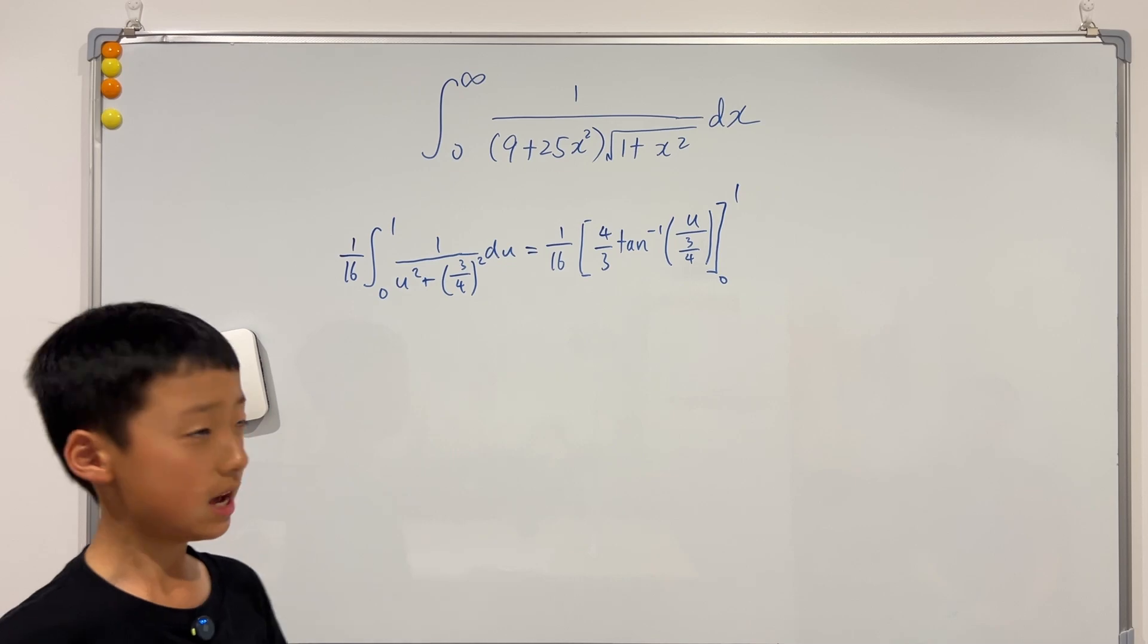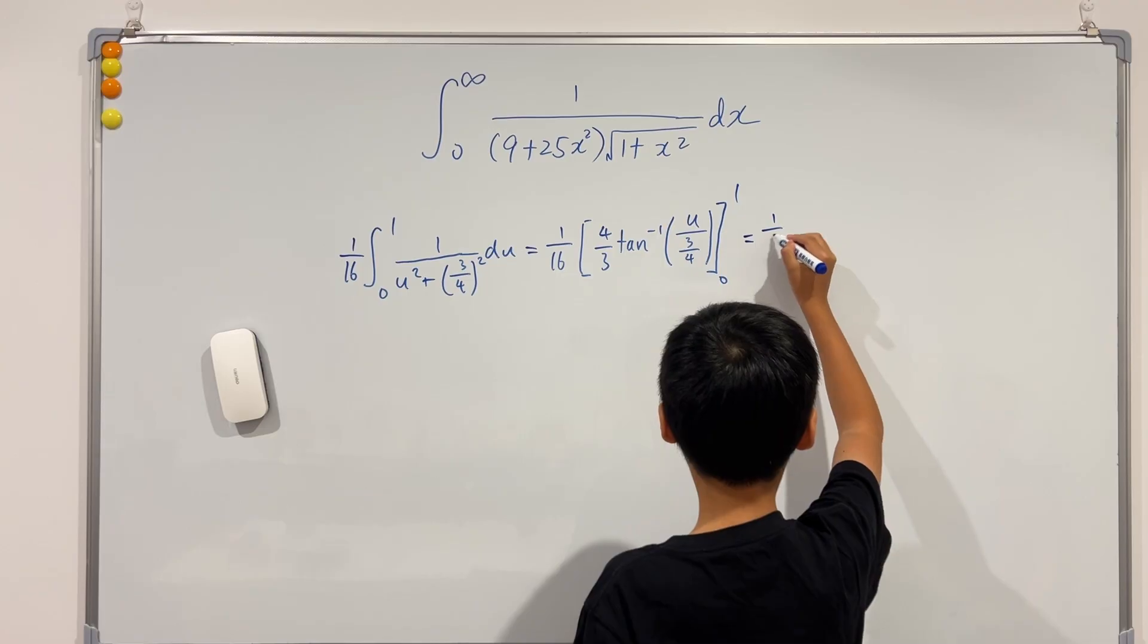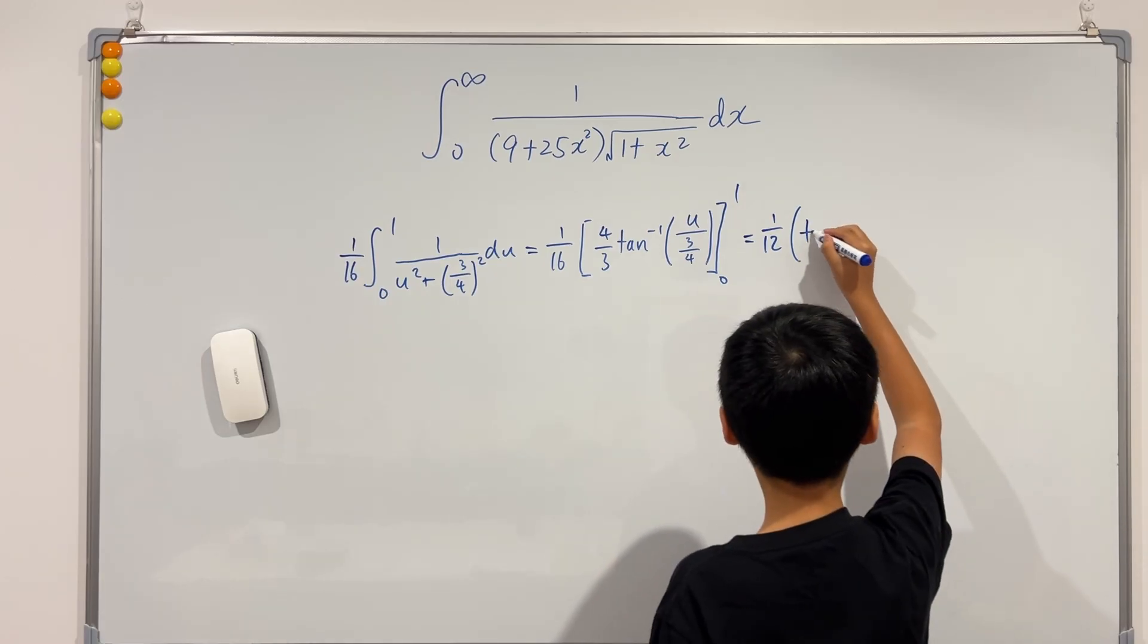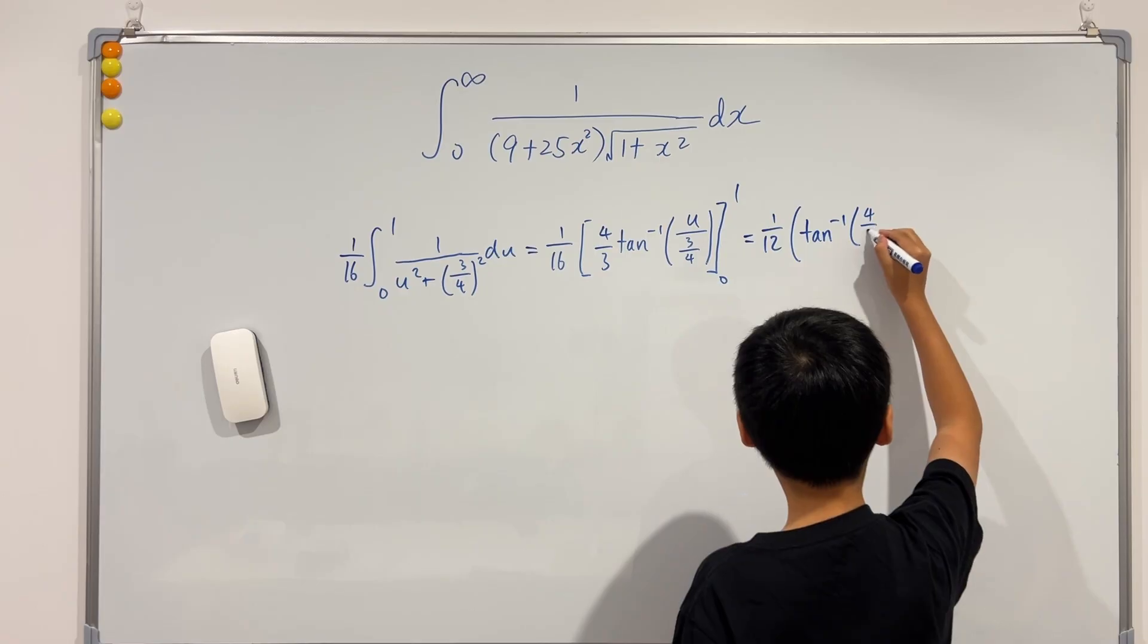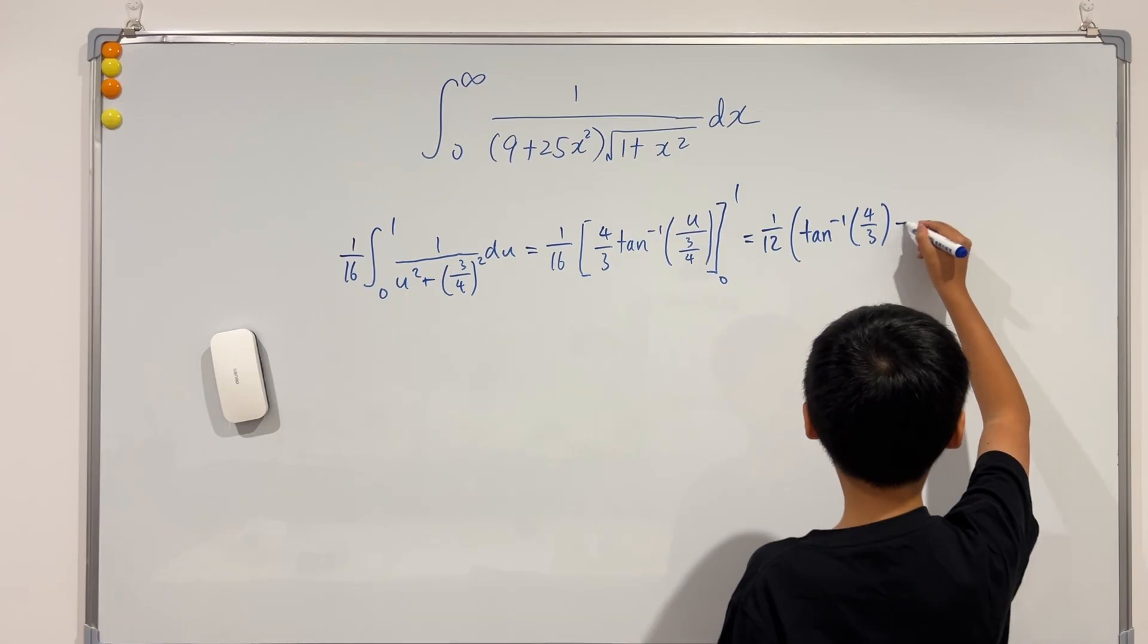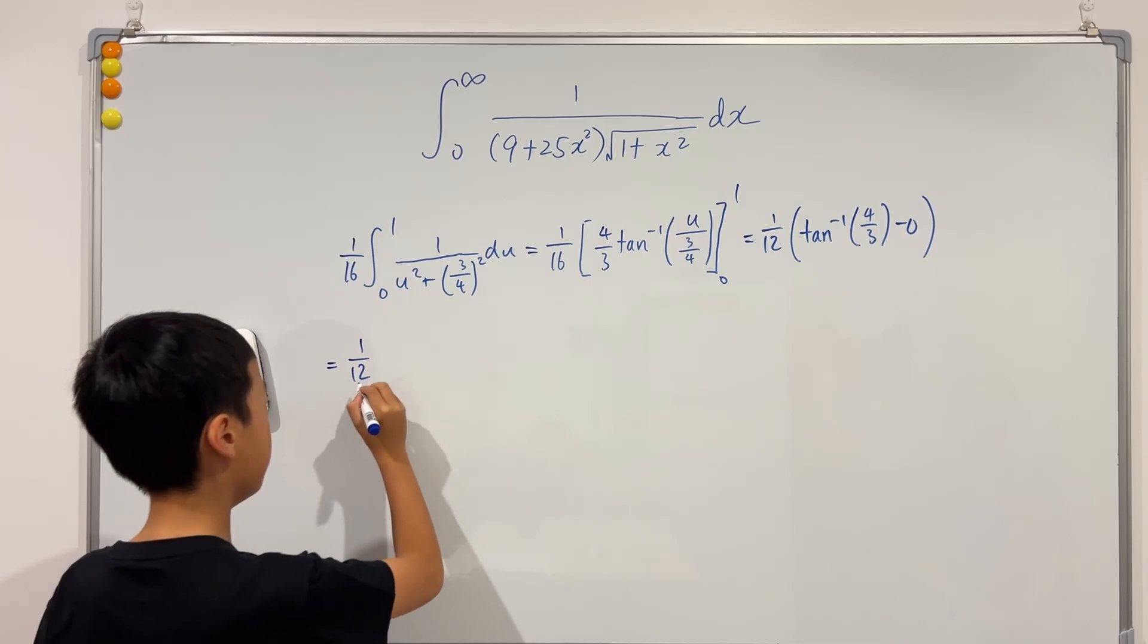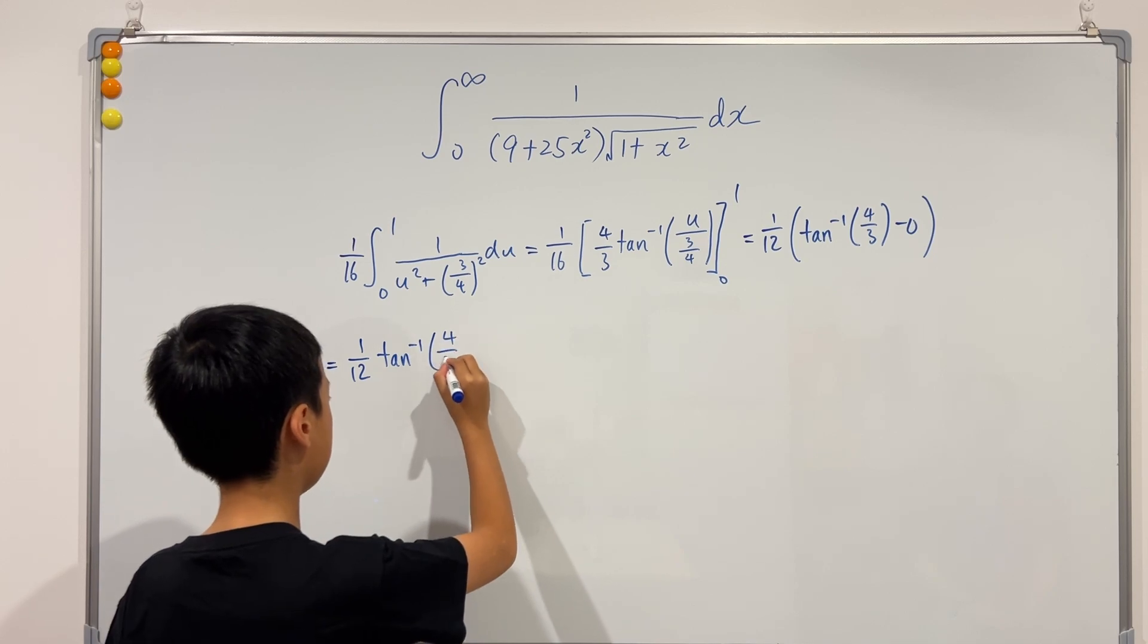So I'm going to take the 4 over 3 outside. So we just get 1 over 12 times, if we plug in 1, then we get the inverse tangent of 4 over 3. And if we plug in 0, then we get 0. So the final answer will just be 1 over 12 times the inverse tangent of 4 over 3.